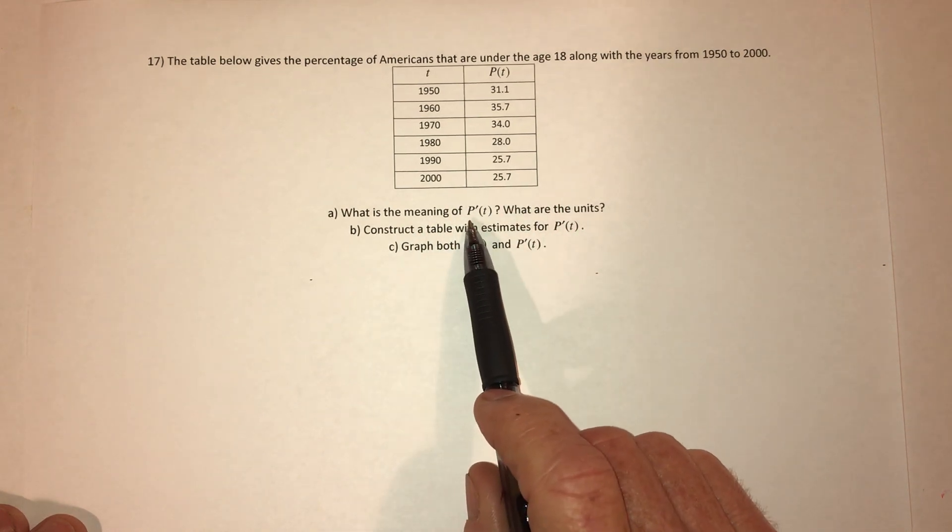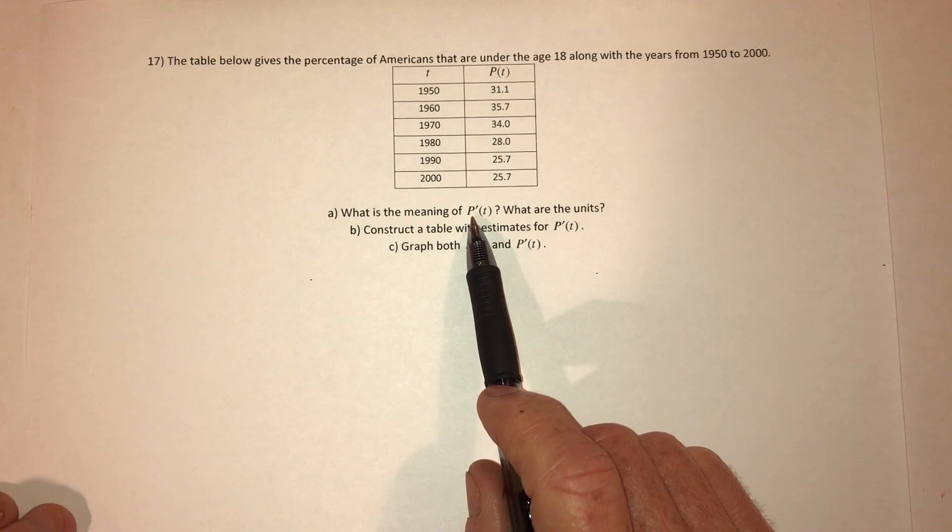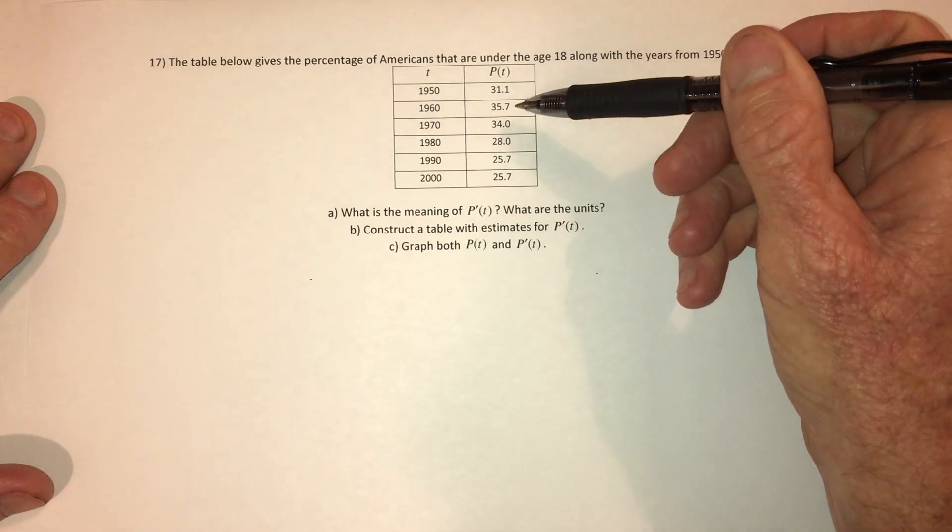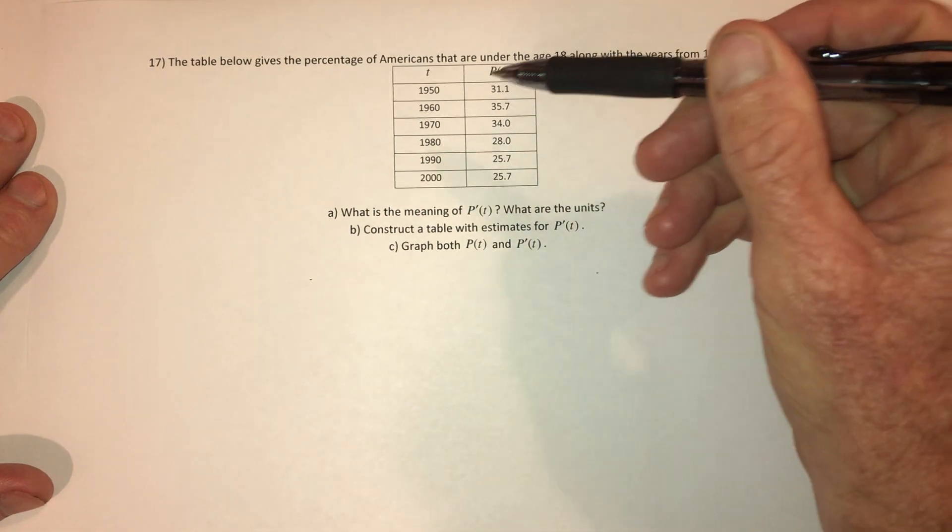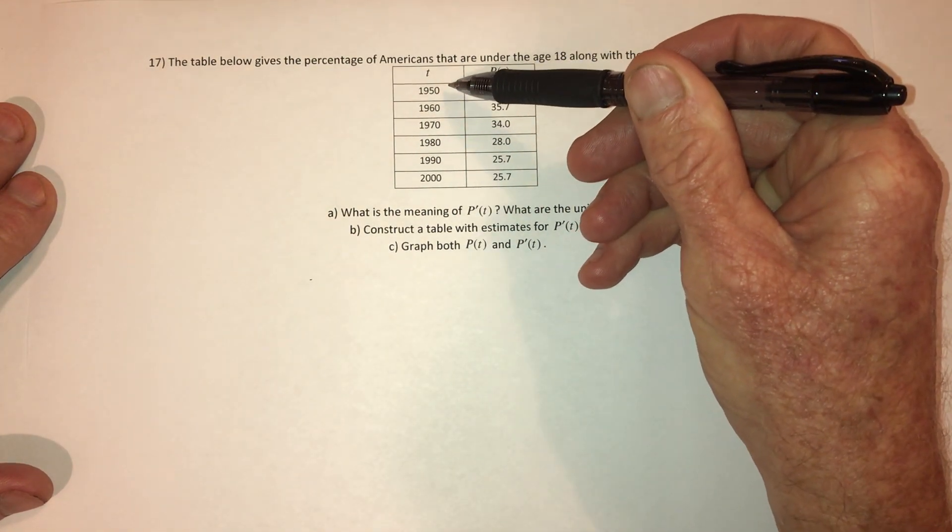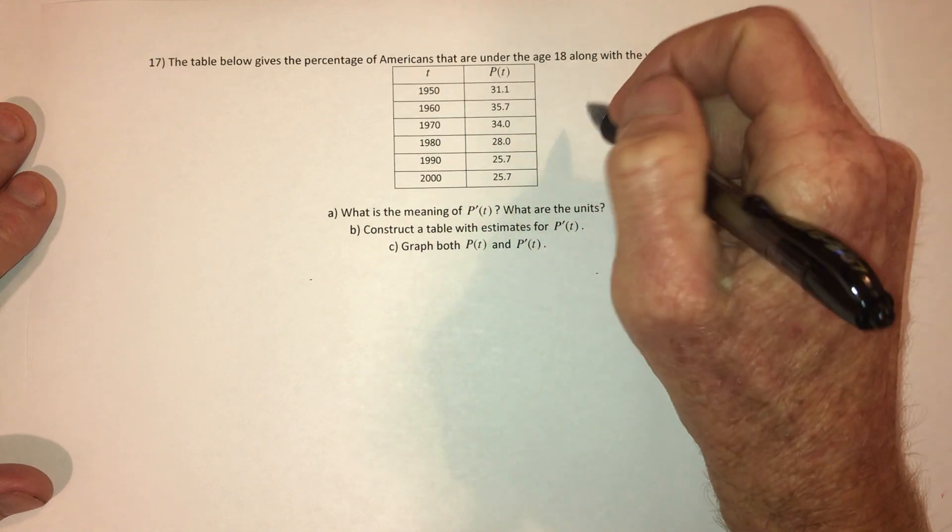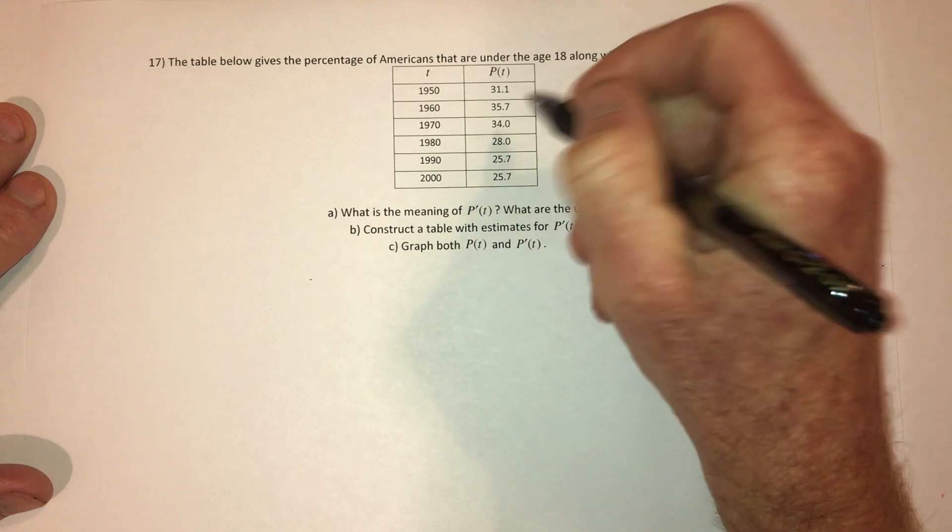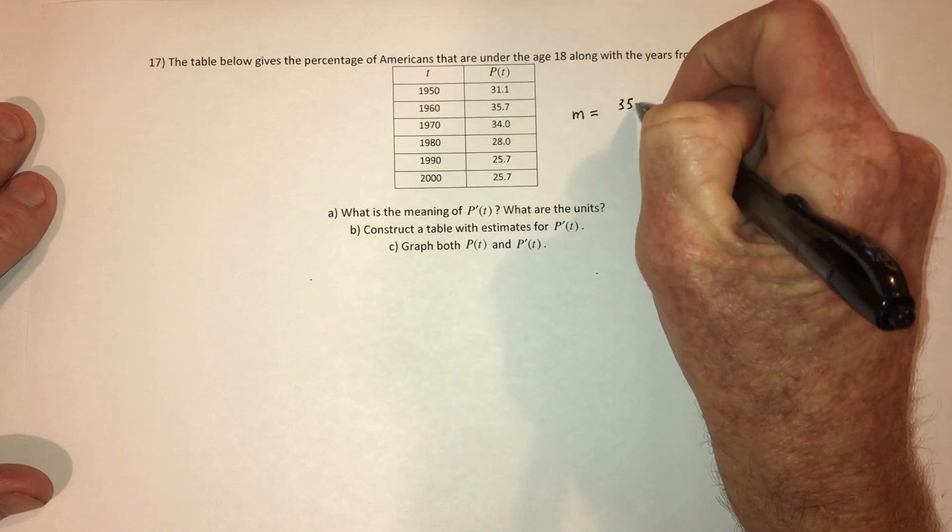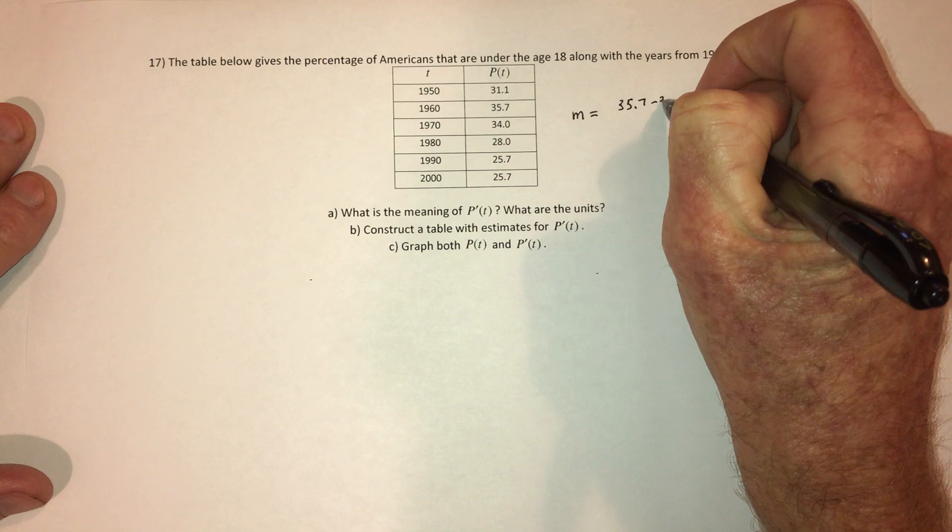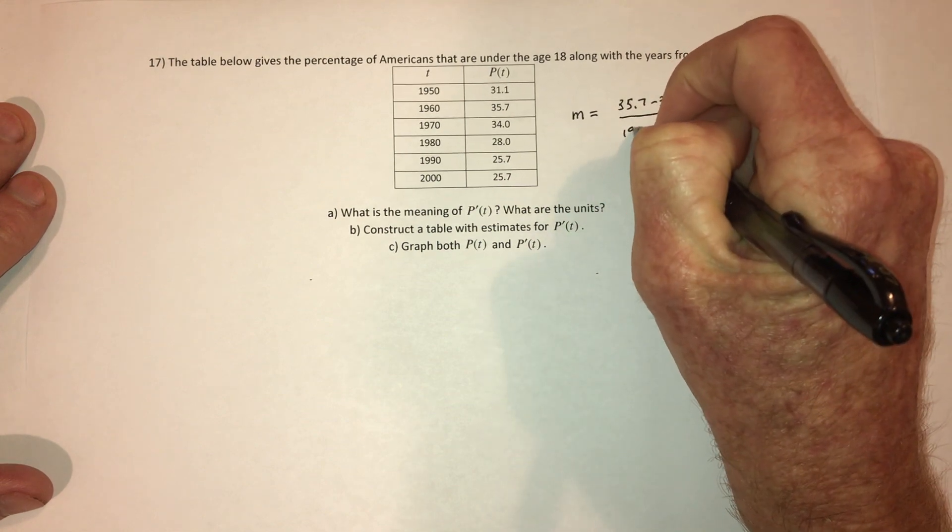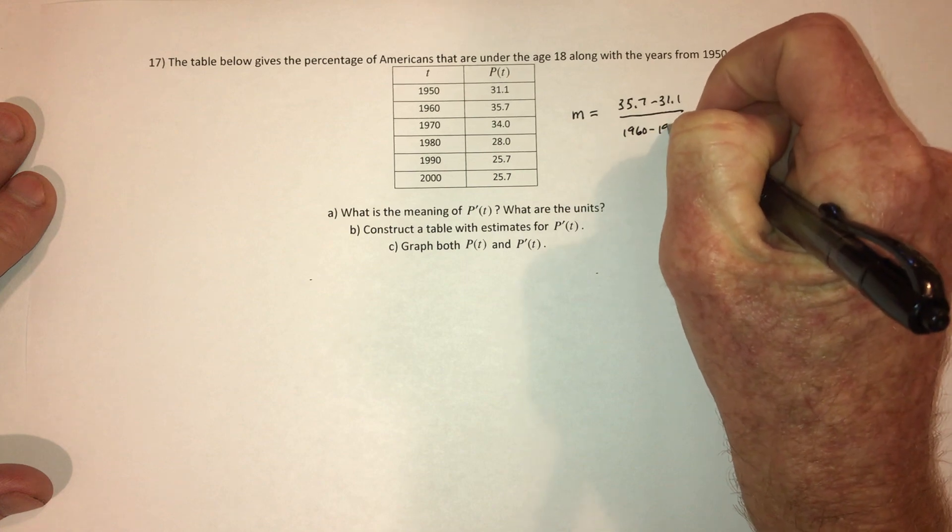So what's the meaning of the derivative? The derivative means slope. How fast is this growing or shrinking? So slope would be y2 minus y1 over x2 minus x1. So that would be 35.7 minus 31.1 over 1960 minus 1950.